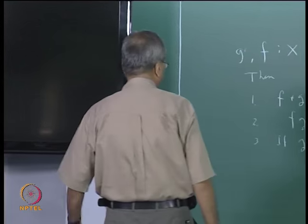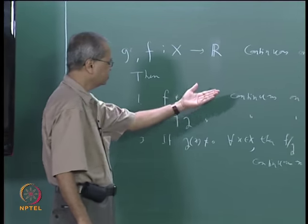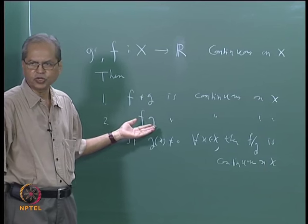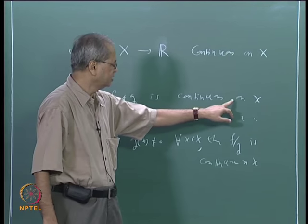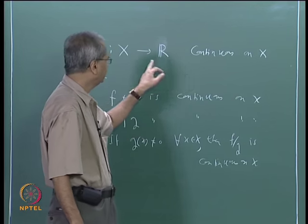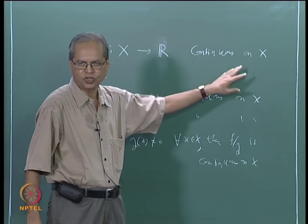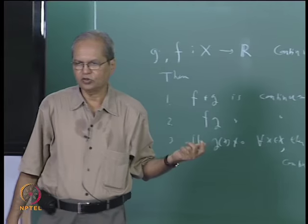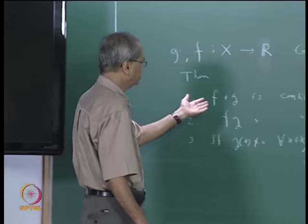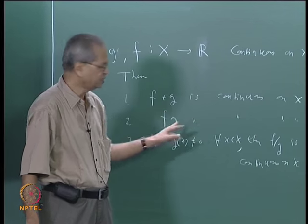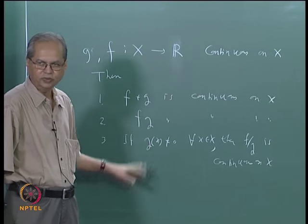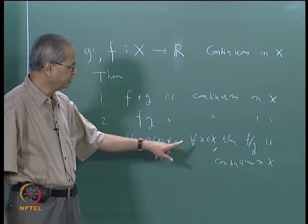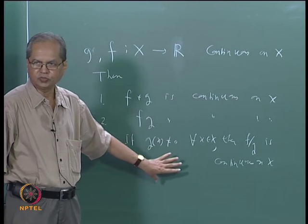We can also write a theorem at a particular point. If g is not equal to 0 for every x in x, then f by g is continuous on x. You can also state it for continuity at a point: suppose both f and g are continuous at some point x-naught in x, then f plus g is continuous at x-naught, fg is continuous, and if g(x-naught) is not 0, then f by g is continuous at x-naught.